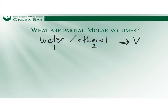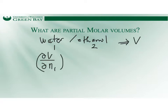The partial molar volume of water is defined as the change of the total volume per change of the number of moles of water, when we are holding the ethanol moles constant. This I call the partial molar volume of one — V1-bar — that means per moles of water.